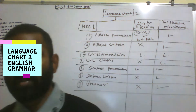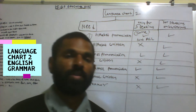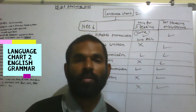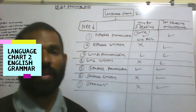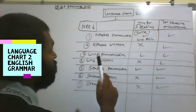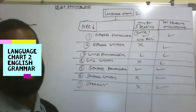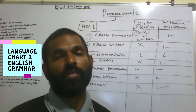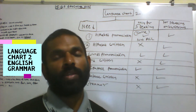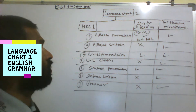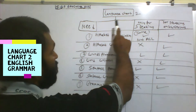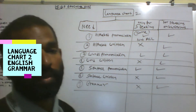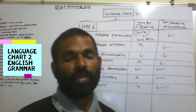The topic is very important — language chart. What language is and how language works is the most important thing when you learn any language. This is language chart two. If you have not yet learned chart one, go to the description box where we have put the link to language chart one. In language chart two, we are discussing two communication skills: first, speaking skill, and second, written skill.